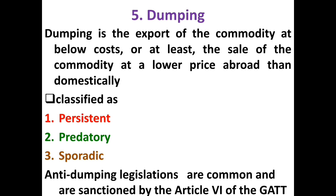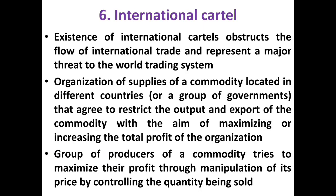Anti-dumping legislations are common and sanctioned under Article 6 of GATT 1994, which is the trade in goods related agreement of the World Trade Organization. The international cartel is an organization of suppliers of a commodity located in different countries — or even a group of governments — that agree to restrict output and exports with the aim of maximizing joint profit. There can be two types of cartel: centralized cartel and market-sharing cartel. Examples include the Organization of Petroleum Exporting Countries (OPEC) and the International Air Transport Association (IATA). The existence of international cartels, like other NTBs, obstructs the flow of international trade and represents a major threat in the global trading system.